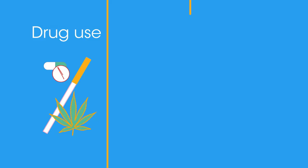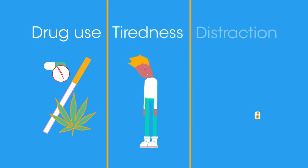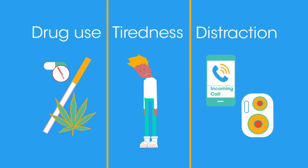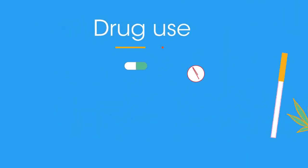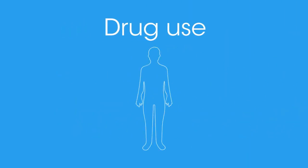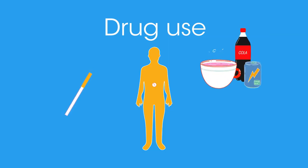Our reflex action to a touch takes about 0.15 seconds; to sound it's about 0.17 seconds; and to sight, 0.25 seconds. Several things can alter the response time to a stimulus in everyday life: drug use, tiredness, or distraction. A drug is any substance that when ingested alters the way the body performs. Drugs that we commonly take might include nicotine from smoking, caffeine from beverages, and alcohol from drinks.